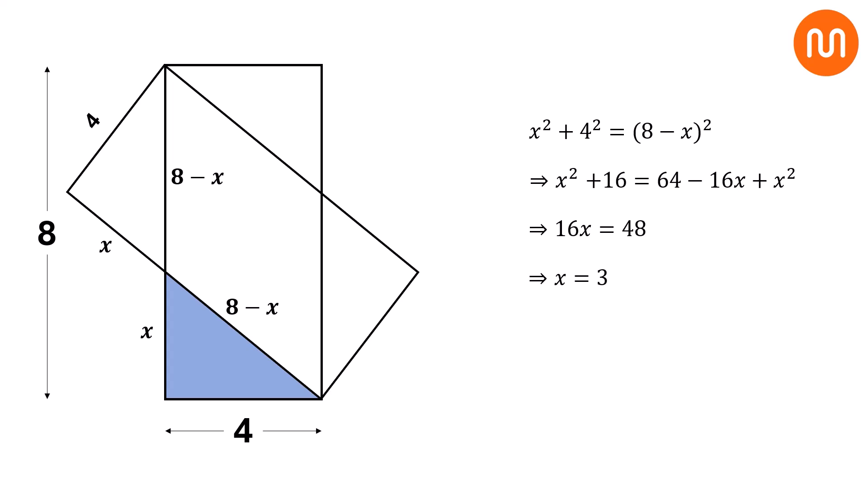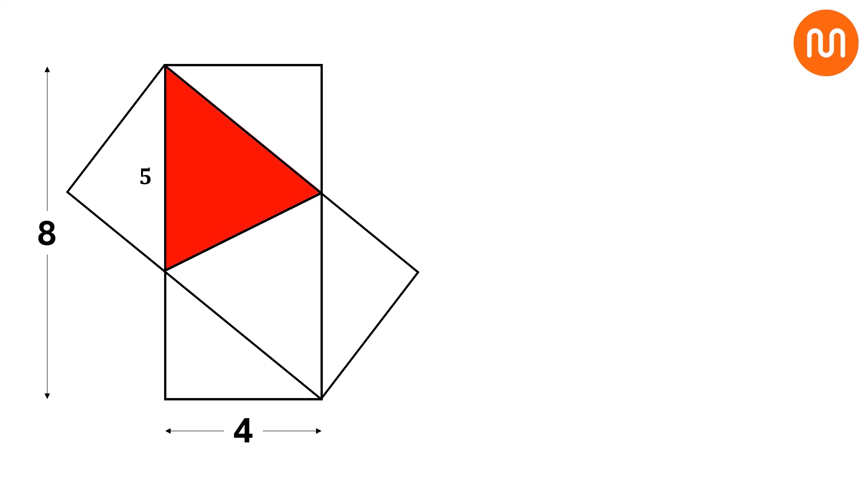Substituting x back, the hypotenuse of our triangle is 8 minus 3 equals 5. Now, focus on this red triangle. Its base is 5, and its height is the same as the rectangle's base, which is 4.